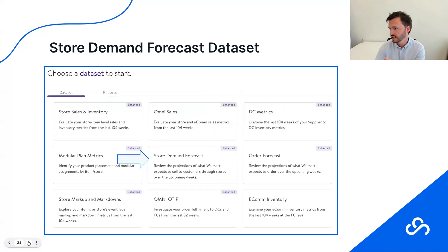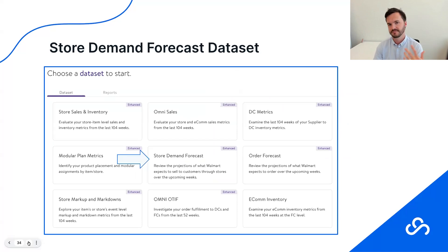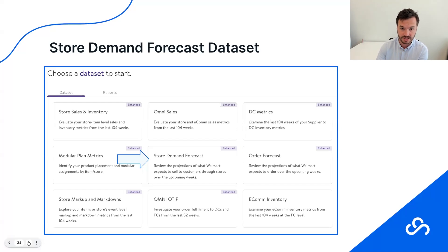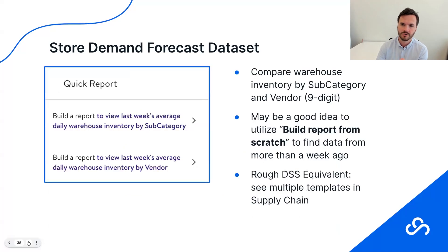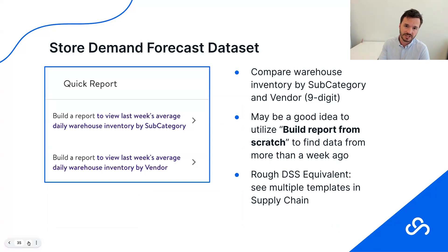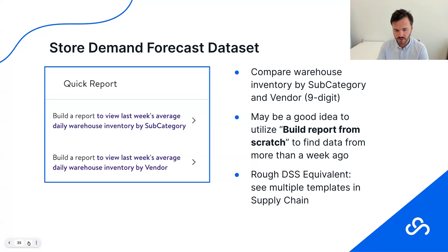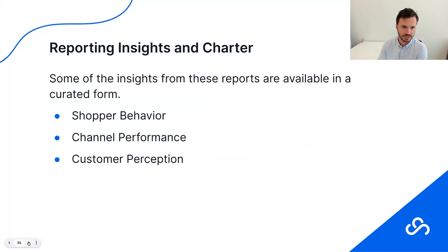I want to talk about store demand forecast. We have a section at the end to talk about the vendor scorecard, which might be the only thing some of you ever use in Luminate. We're talking about demand, forecasting, and on-hand metrics at the DC level — and this is the same thing but at the store level. It might be helpful just to build a report from scratch at the beginning so you can see more of the high-level stuff. The two pre-built reports here are last week by subcategory and by vendor, depending on what level of granularity you want.